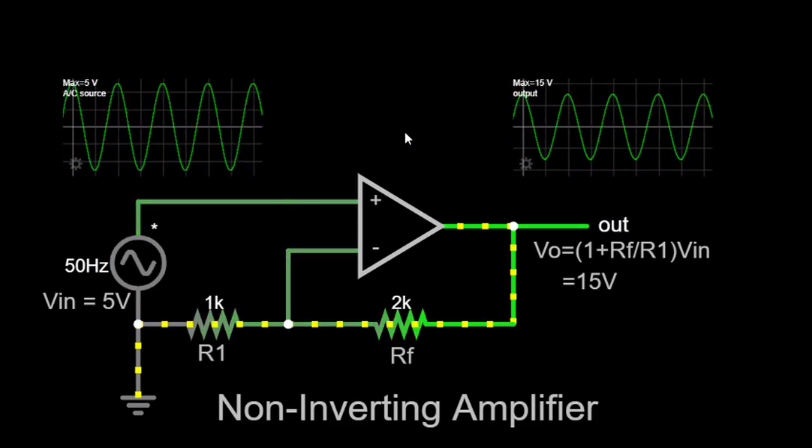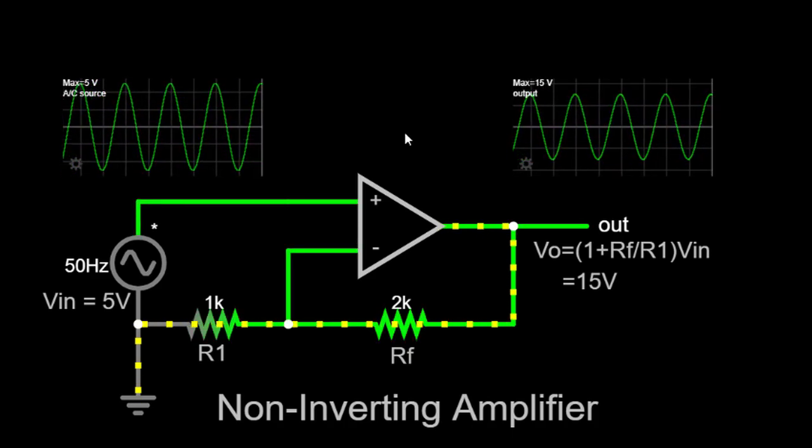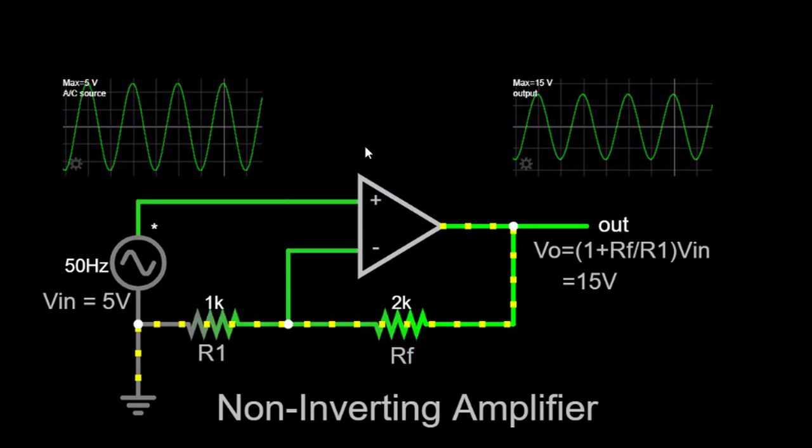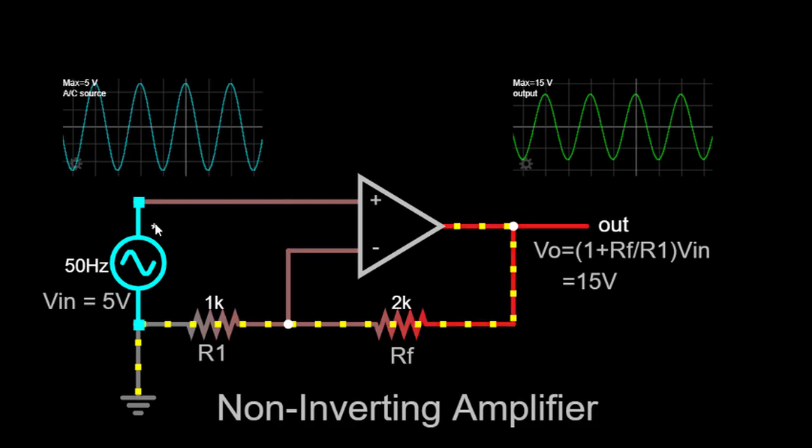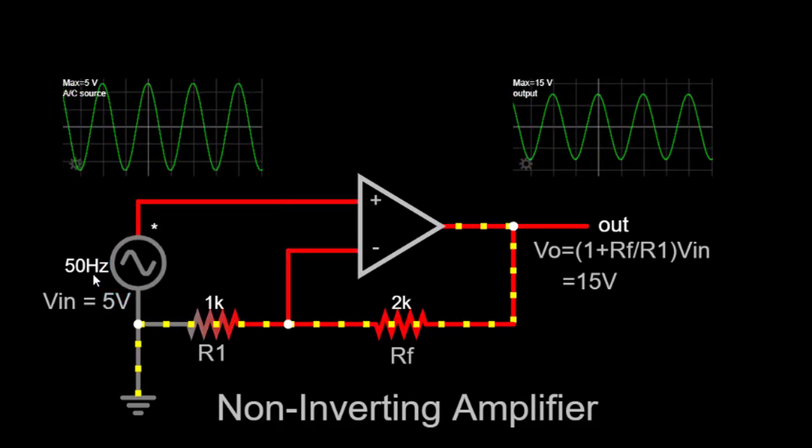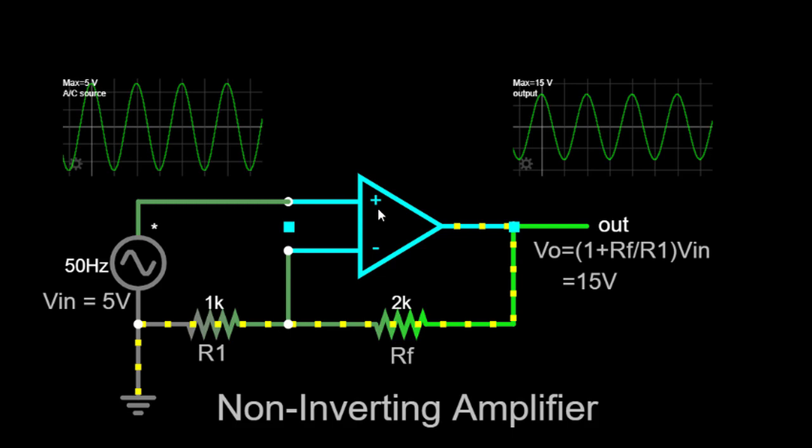Here, we have the simulator circuit of the non-inverting amplifier. We have connected an input voltage source (VIN) with a 5V amplitude and a frequency of 50Hz to the non-inverting terminal of the op-amp.